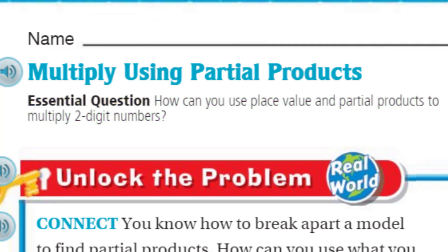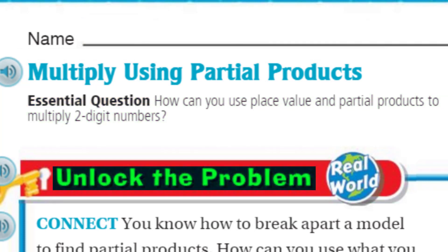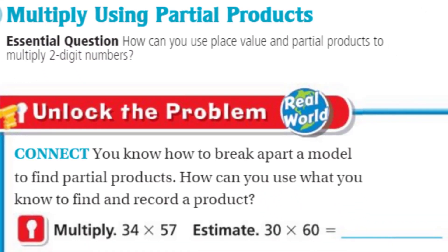Let's go ahead and unlock the problem. I don't see a real-world problem here — it does say connect. You know how to break apart a model to find partial products. How can you use what you know to find and record a product? Let's follow this because GoMath is good about step-by-step. We're going to multiply 34 times 57.